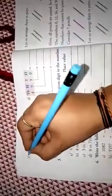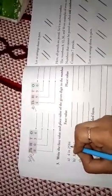This next one you will do in your homework. See, Part D, write the face value and place value of the given digit in the number. Now what do you have to do? Face value and place value. Look, 4 in 2584.